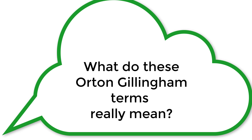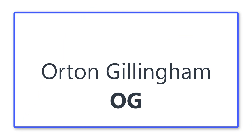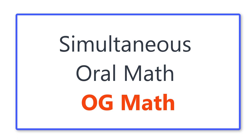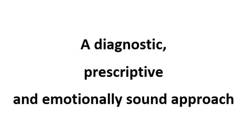Many of us who are Orton-Gillingham teachers and practitioners use terms that we think we understand perfectly, but they often leave others thinking — okay, that sounds good, but what does it really mean? The Orton-Gillingham approach is often known by its abbreviation OG. Another term is MSL, or Multisensory Structured Language, and less well-known is Simultaneous Oral Math, or OG Math. Each of these terms describes an approach for academic instruction that is diagnostic, prescriptive, and emotionally sound.